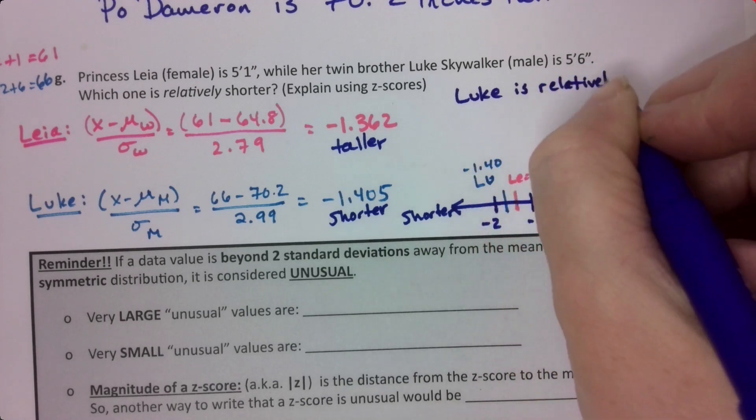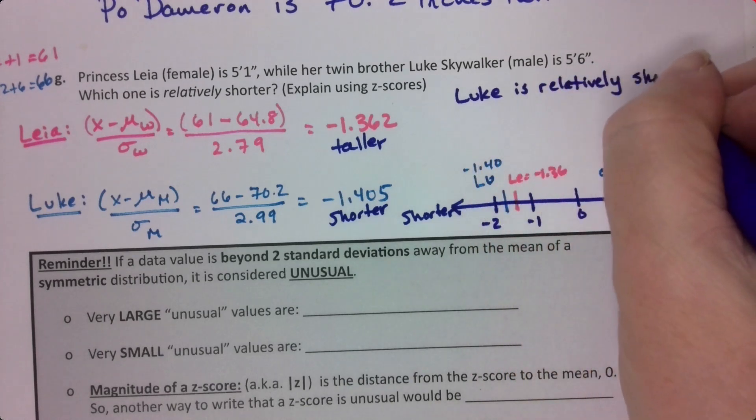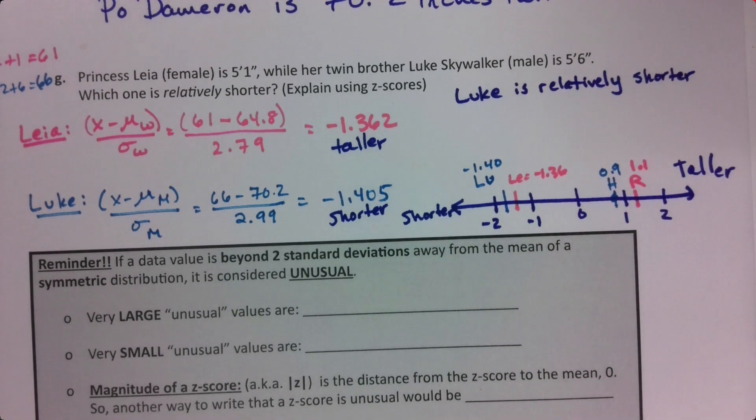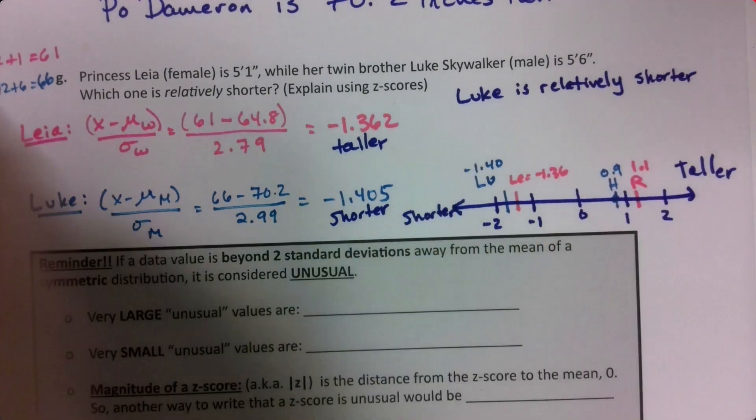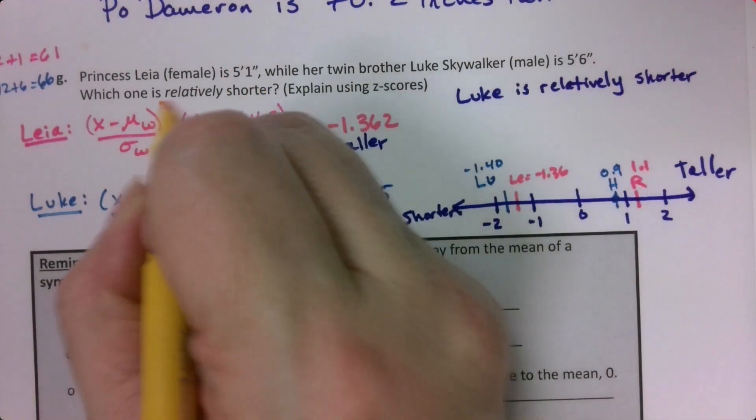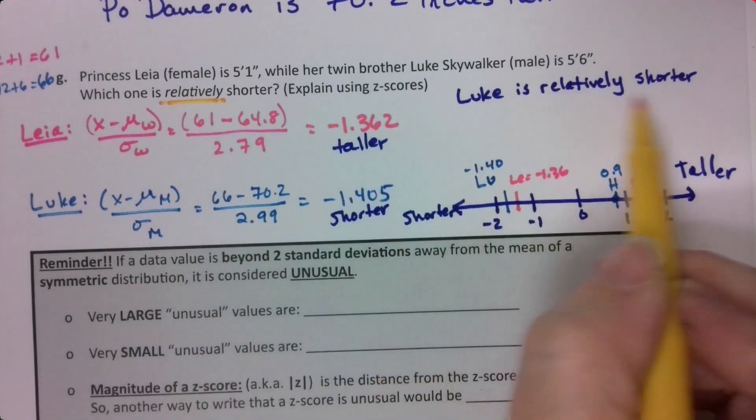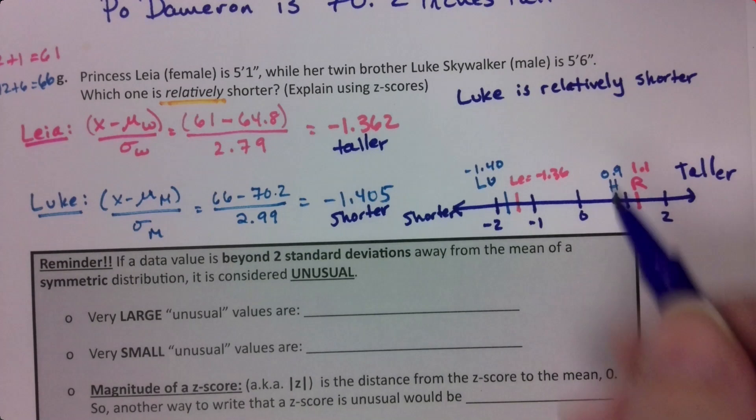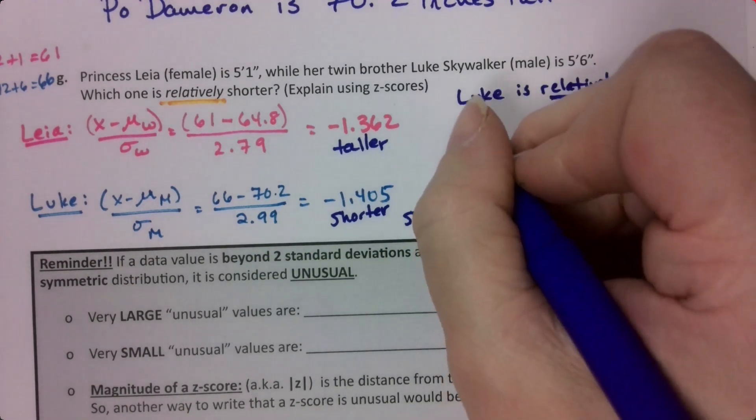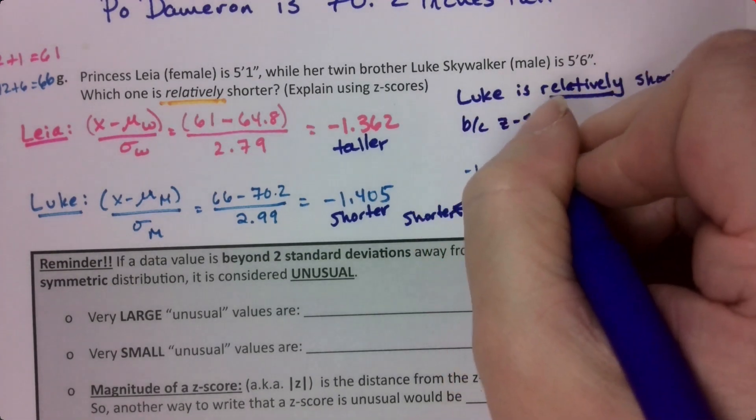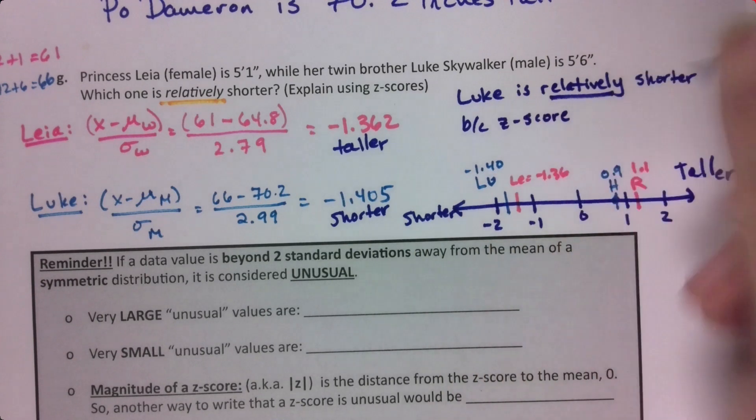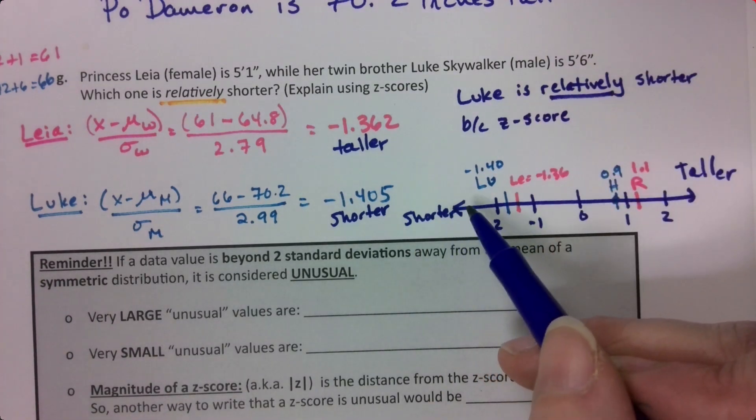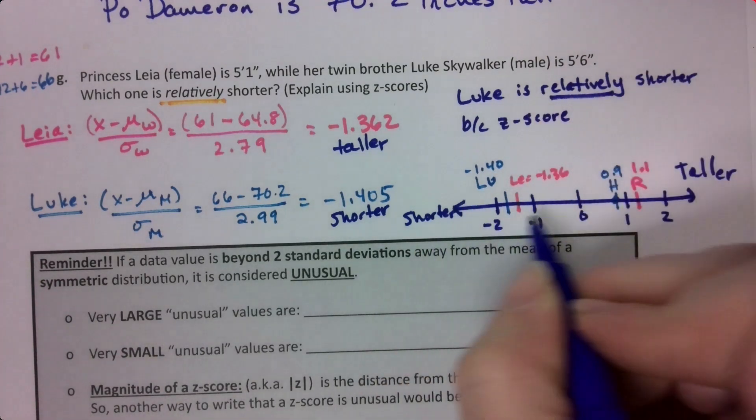Of course, she's absolutely shorter. If you put them next to each other, she's shorter than him. But that's not what we're asking. We're asking in relation to their group. If you compare him to all men and her to all women, he is the shorter one. Luke is relatively shorter because his z-score is to the left of hers. Technically, it's smaller.